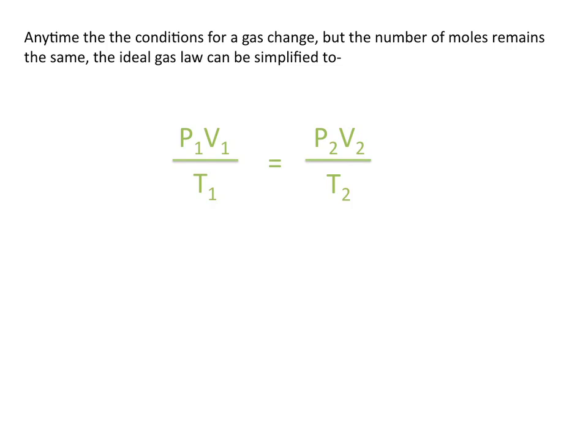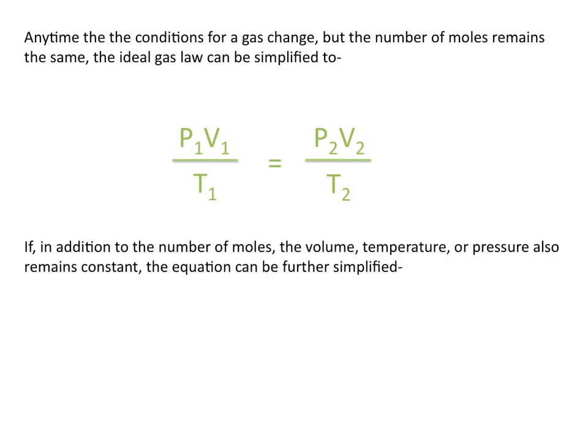The variables with subscript 1 are the initial conditions of the gas, and the variables with subscript 2 are the final conditions. If in addition to the number of moles, the volume, temperature, or pressure also remains constant, you can simplify the ideal gas law even further to one of the following forms.